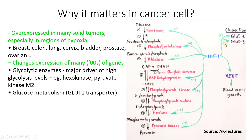Not only that, HIF-1 also activates the formation of GLUT1 and GLUT3 — the glucose transporters. Glucose must enter the cell via something, and these are two specific channels that effectively bind to glucose and allow it to be brought inside the cells. If you have a lot of tumor cells, you need to make sure you have a lot of glucose entering in as short a time as possible, and high levels of these transporters effectively allow you to do so.